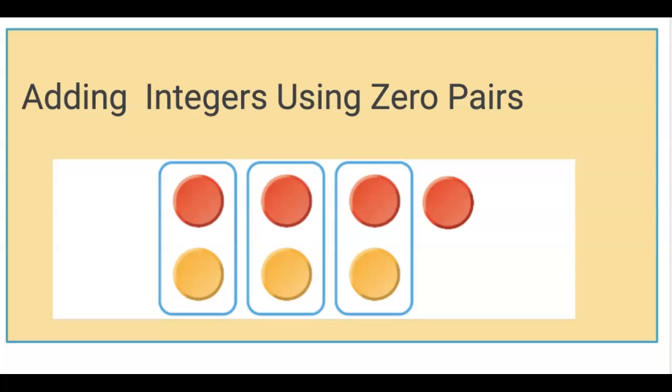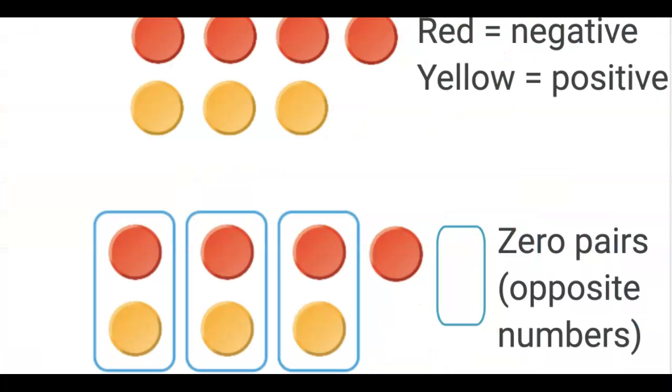This is a quick tutorial on how to use the Jamboard for adding integers using zero pairs. The second slide shows the red chips are negative, the yellow chips are positive.